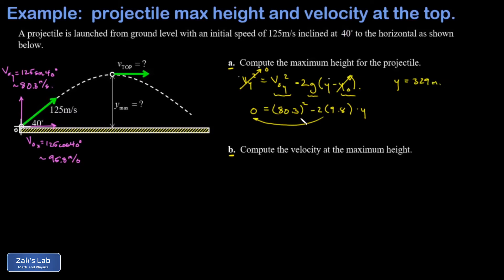So now I want the velocity at the maximum height, and this is really just a concept question at this point. If the y component of the velocity is zero at that moment in time, then all I have remaining is the x component of the velocity.